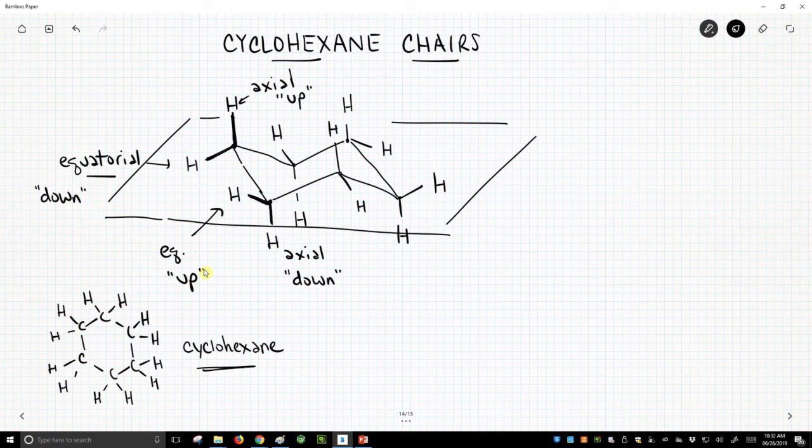So each carbon on the ring has a group that's up and a group that's down, and it has an axial and equatorial position. But these alternate around the ring. If axial is up on one carbon, it's going to be axial down on the other. What do you think this one is? This is axial up, and the equatorial is down. So we see these going around the ring.